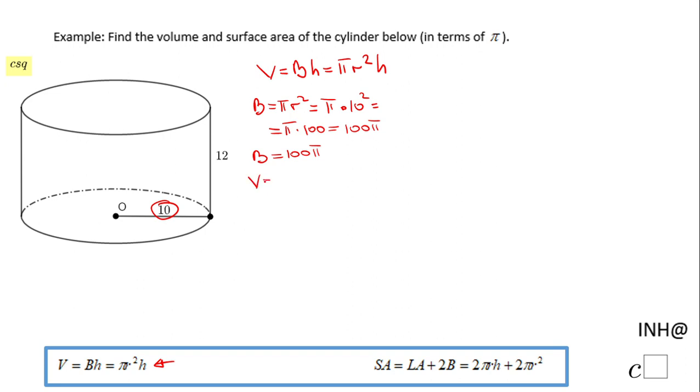So we can go to the volume and then we have this 100π times the height which is 12. So the volume is going to be 1200π.